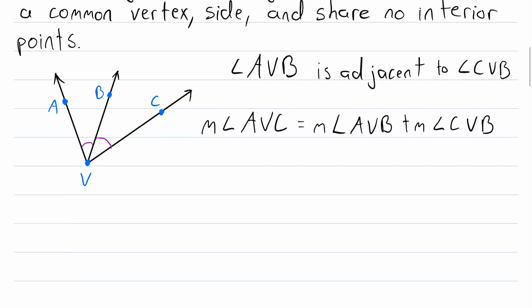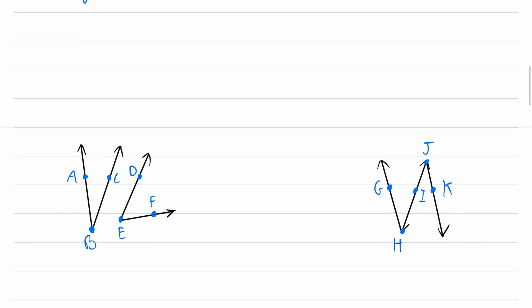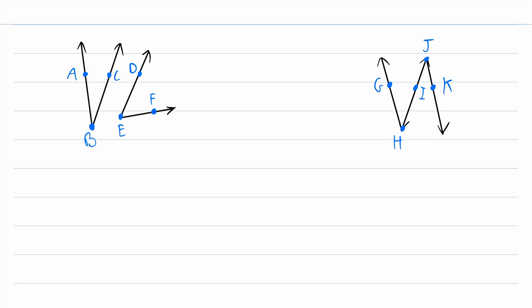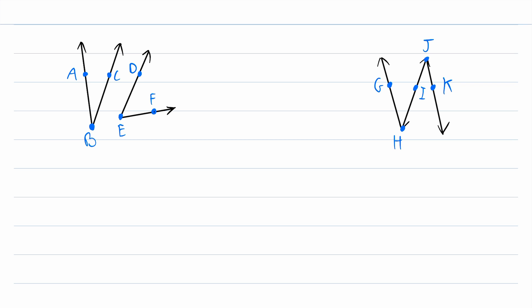Now to clarify this definition more, let's check out some non-examples. Is angle ABC adjacent to angle DEF? Well, no, certainly not, because they don't have a common vertex and they don't have a common side. So those two angles are not adjacent.